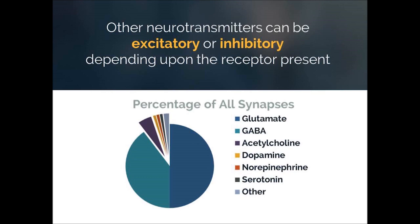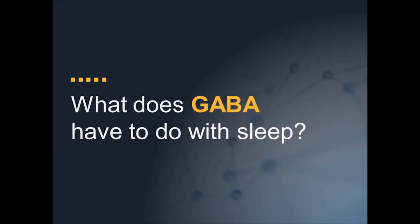These neurotransmitters can be excitatory or inhibitory depending upon the receptor present. If we continue the analogy with communication, these neurotransmitters are like homonyms — the same word can have different meanings. For example, the word "row" can mean moving a boat with oars, or it can mean a line of things like a row of chairs. The meaning depends upon the context, and in neuronal communication, the context is determined by the postsynaptic receptors. Now that we know what GABA is, let's talk about what GABA has to do with sleep regulation.